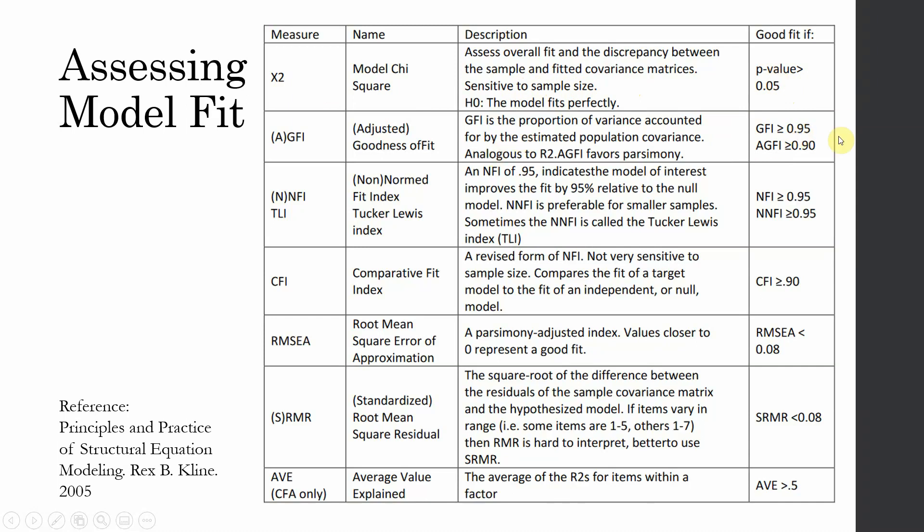The next is GFI and AGFI. GFI greater than 0.95, AGFI greater than 0.90, NFI and NNFI both should be greater than 0.95, CFI greater than 0.90, RMSEA should be less than 0.08, SRMR less than 0.08, and average variance extracted, which is a measure of convergent validity, should be greater than 0.5.